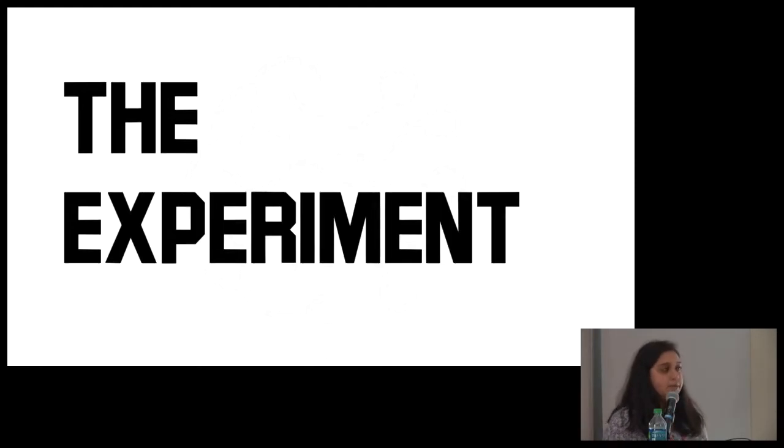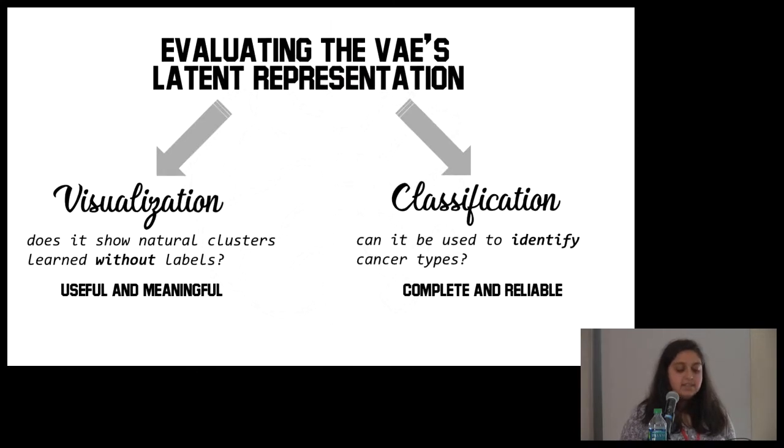So the specific experiment. Once the variational autoencoder is built, you need to test whether it's actually working or not, obviously. There are two big ways that I did this, evaluating the VAE's latent representation. So making sure that that 36 dimensional data is actually correct and actually working and useful. One way is visualization. That's showing, does it show natural clusters learned without labels? It's really important to remember that the VAE wasn't given labels. The point of using unsupervised learning is seeing, is it able to find patterns in the data itself? Is it able to see, these kinds of cancers are related? And then classification is, can it be used to identify cancer types? That's checking, is it actually true? Is it complete and is it reliable? Is it getting all of the most important information and is it getting it correctly?